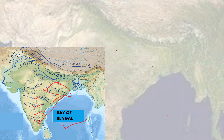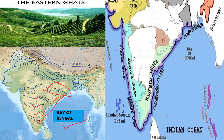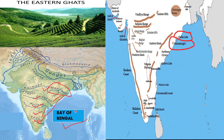The eastern ghats extend from the Mahanadi river in the north to the Nilgiri hills in the south. They form a discontinuous chain running almost parallel to the eastern coastal plain. The hills are smaller and generally sloping compared to the western ghats, with an average elevation of 450 meters and a maximum height of 1,200 meters. Many rivers flow through here draining into the Bay of Bengal. They lie in the rain shadow area of the southwest monsoon winds. The highest peak is Deomali, and the second highest is Mahendragiri near Chilika Lake in Odisha. These hills are famous for sandalwood.